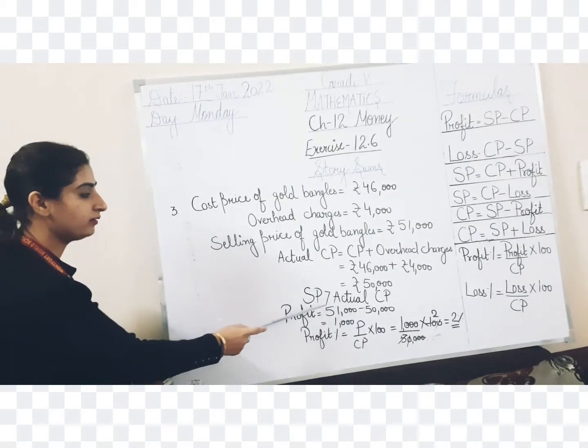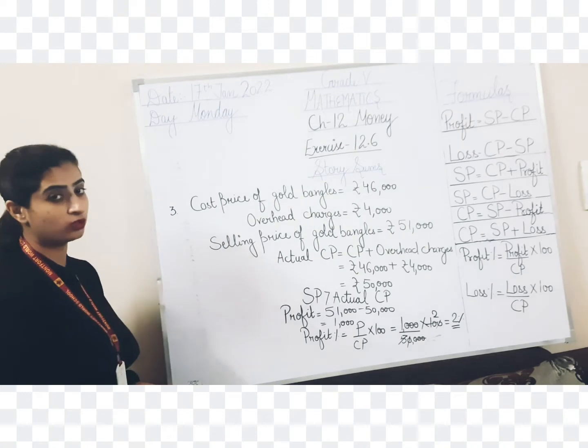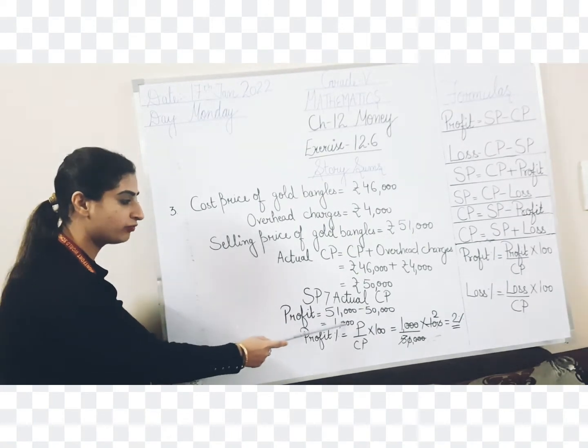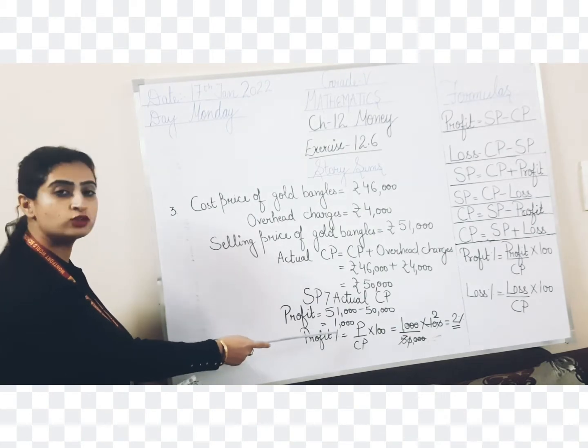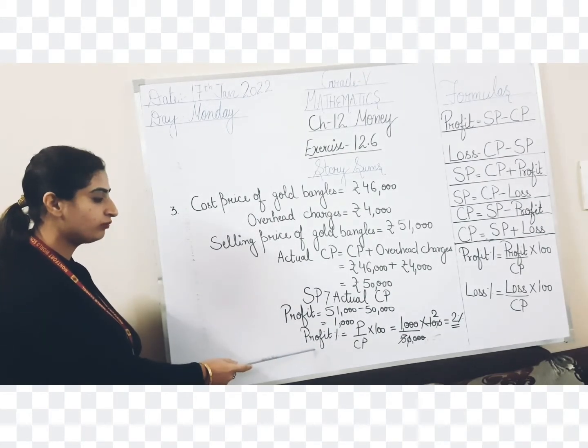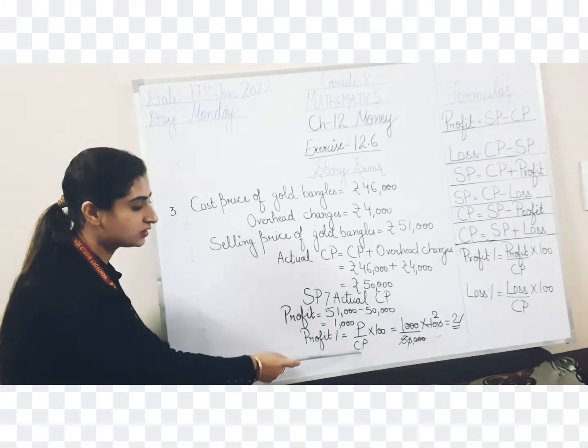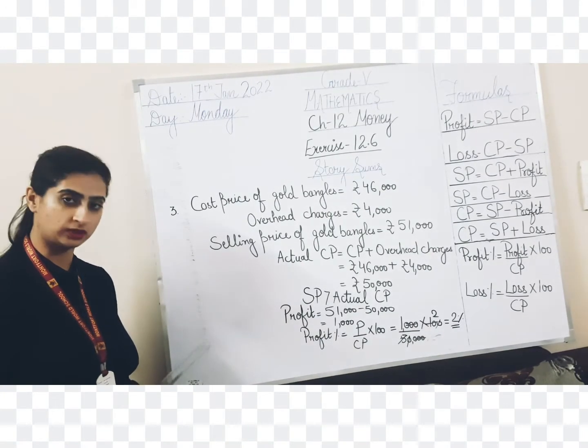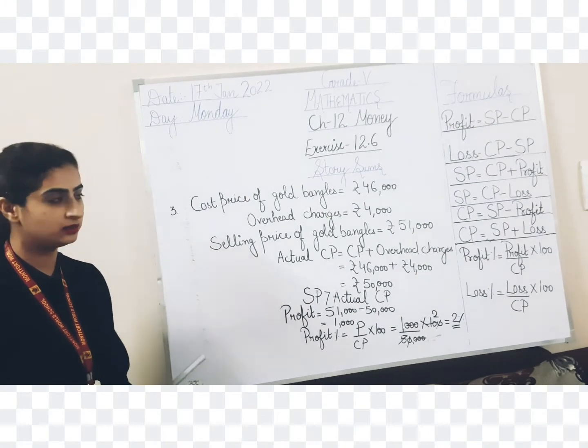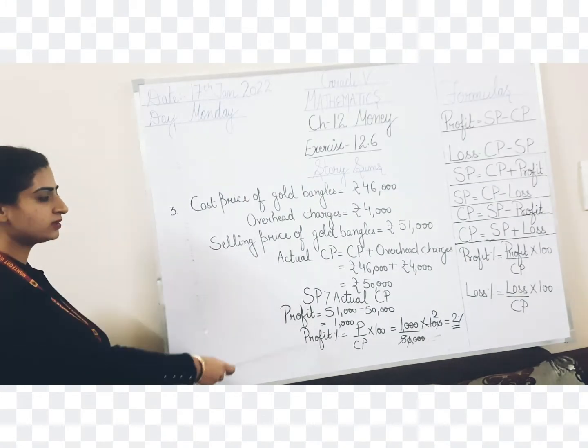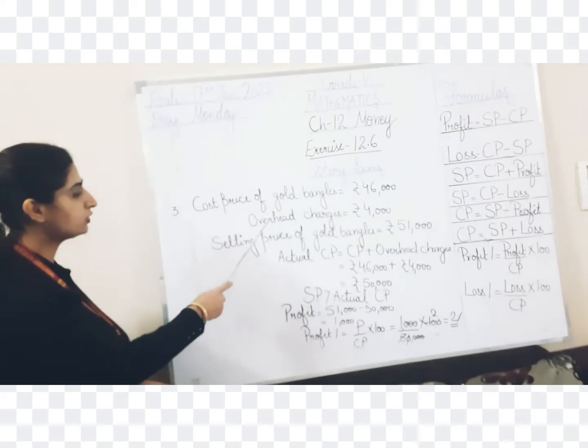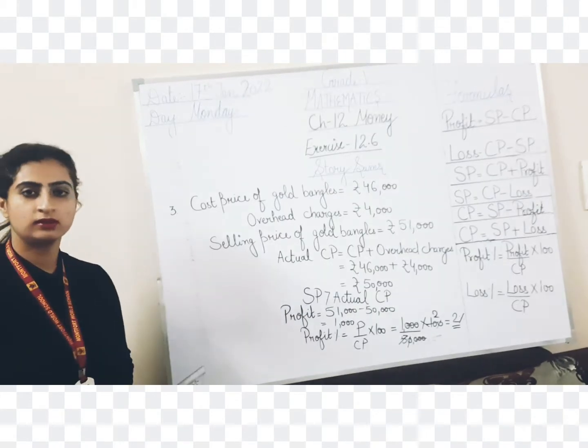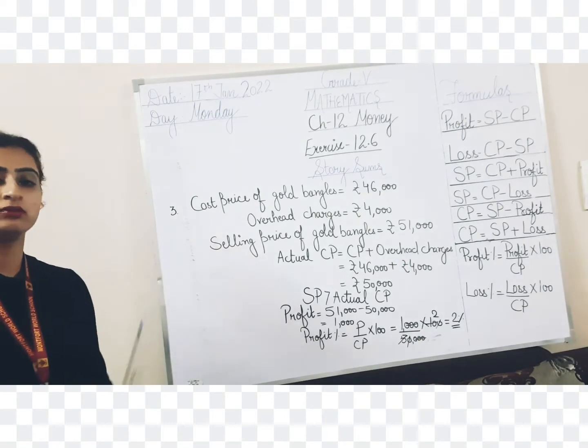Then again compare selling price and actual cost price now. Selling price is more so profit will be 51,000 minus 50,000 that is rupees 1,000. Then we need to calculate the profit percent, that is profit upon CP multiply 100, and when we do calculation it comes out to be 2 percent. Again we need to take care - all questions are same, same concept. Just we need to take care of overhead charges. You need to add it in the cost price. Now let's go to the next question.